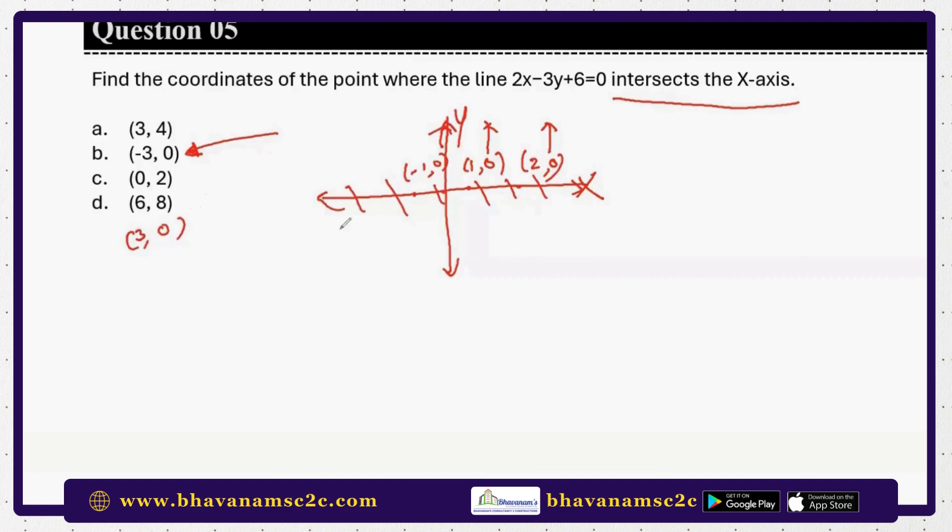Let's solve the question. 2x minus 3y plus 6 equal to 0. Since it intersects the x-axis, what is the y value? 0, obviously. 2x plus 6 equal to 0, where x equal to minus 3. And y value is 0. So B is the answer.